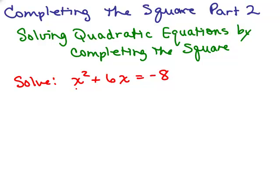We're going to take this problem: x squared plus 6x equals negative 8. We want to write the x squared and the x term on one side of the equation, and we want to know what we can add to that side to make it a perfect square.